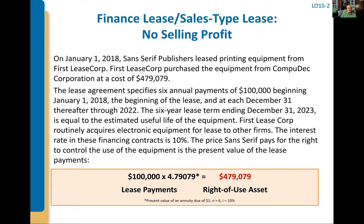We're going to record a right-of-use asset for $479,000. This is a finance lease and sales-type lease. From the lessee's side — the person using the printing equipment — they record a debit to right-of-use asset and credit a lease obligation for $479,000.